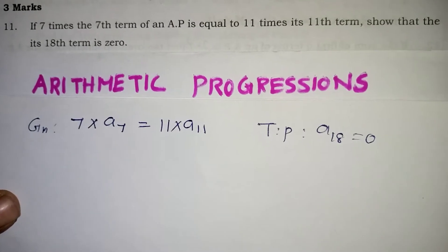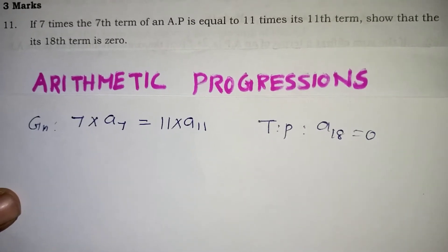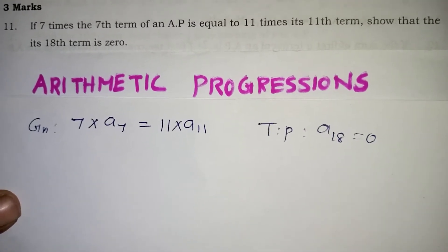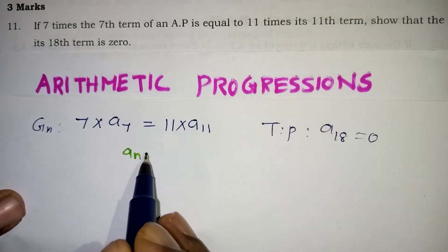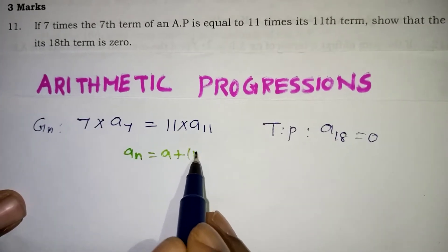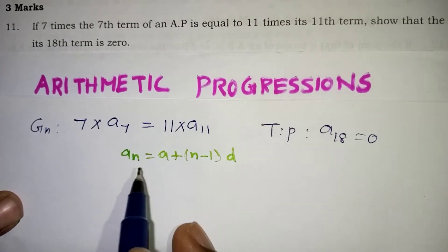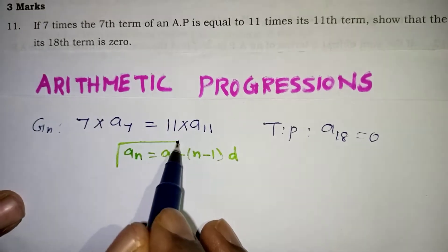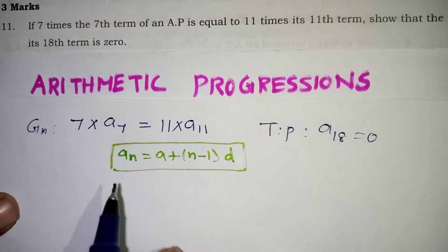Everything is in the form of AN. The basic formula of AP is AN = A + (N - 1) × D. We are going to apply this formula wherever we see AN.